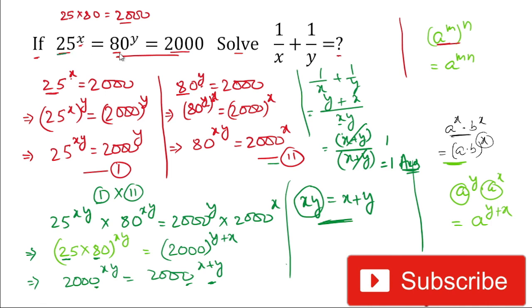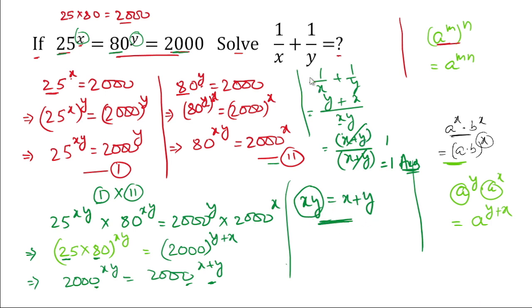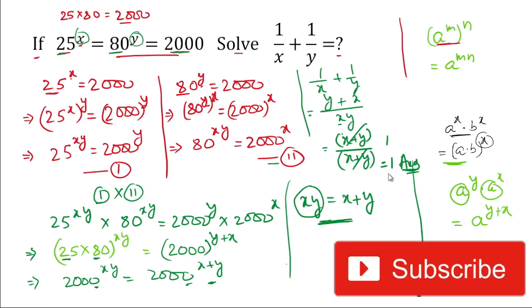It was very easy to solve this problem. The key thing was making the relationship between the three terms: multiplying 25 by 80 to get 2000, making the powers equal, then multiplying the equations to get xy in terms of x + y. That gave us our answer. If you have not subscribed to my channel yet, please subscribe and hit the bell icon. Thank you for watching.